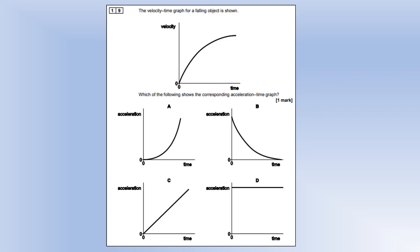The velocity-time graph for a falling object is shown. Which is the right acceleration-time graph? Well, the gradient of the velocity-time graph is clearly decreasing to zero. So the acceleration should be decreasing to zero. That's clearly graph B.